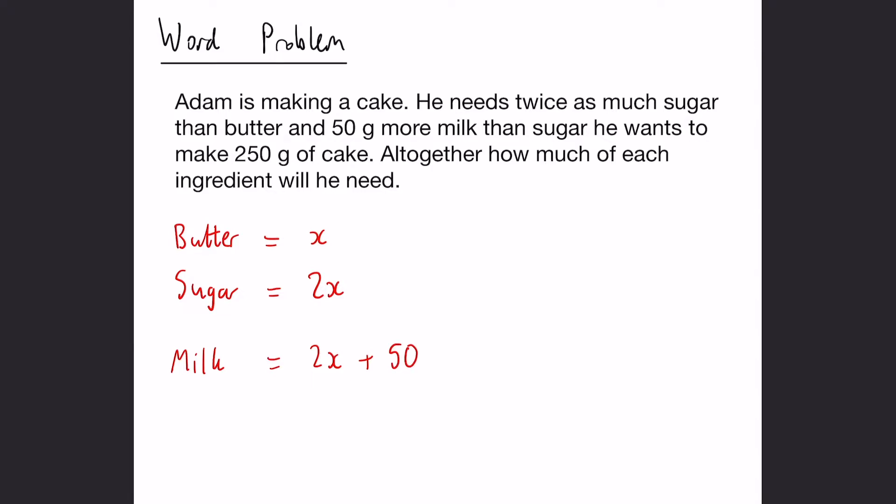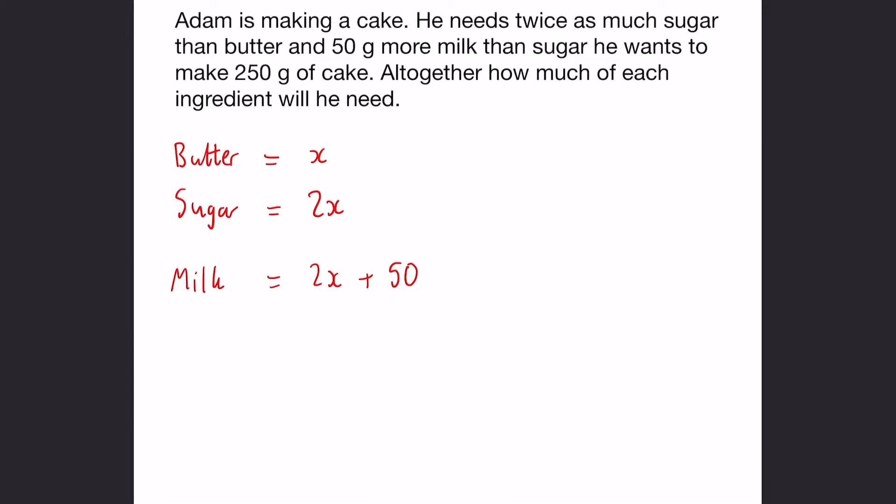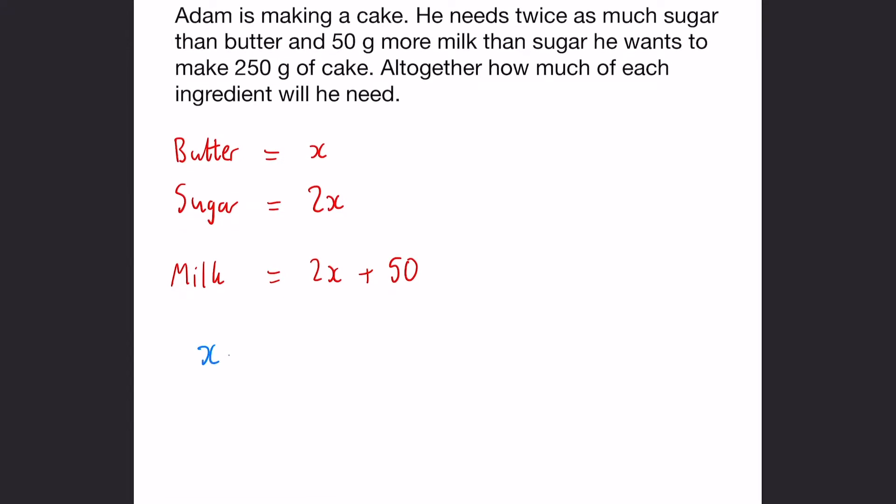So the benefit of having butter as the x is that you don't have to use any negatives for the sugar and milk because you can't go any lower than the butter. And through this we know that in total they want to make 250 grams of cake. So we can form an equation.